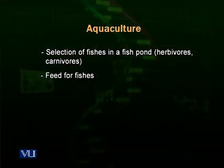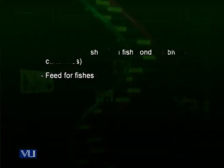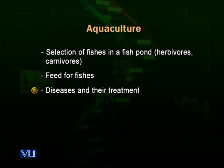Biology also tells us about the feed of the fishes — which food is good for the fish we are growing. If we give them a particular food their growth may be reduced, but if we give them a better-designed food, their growth may increase a lot. Also, when growing fish there could be attacks of various diseases — virus attacks, parasite attacks, or anything else. Biology helps us find out the causes of those diseases and how to treat them using medicines or other biological methods.